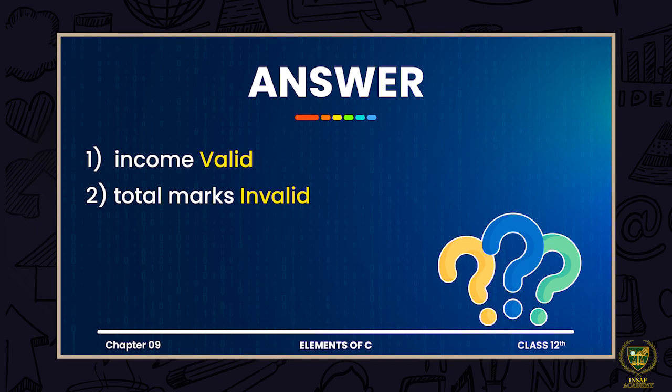The next variable name is 'total mark' — there is a problem with it. It could have been a valid variable name, but we know that spaces are not allowed in variable names. You could use an underscore or connect the words another way, but you cannot use a space. So 'total mark' is an invalid variable name. The reason it is invalid is that spaces are not allowed inside a variable name.